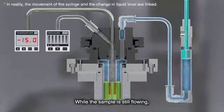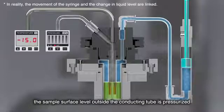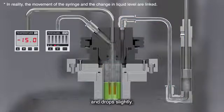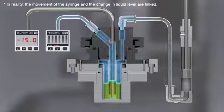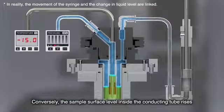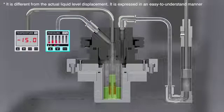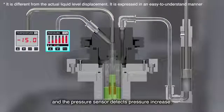While the sample is still flowing, the sample surface level outside the conducting tube is pressurized and drops slightly. Conversely, the sample surface level inside the conducting tube rises and the pressure sensor detects pressure increase.